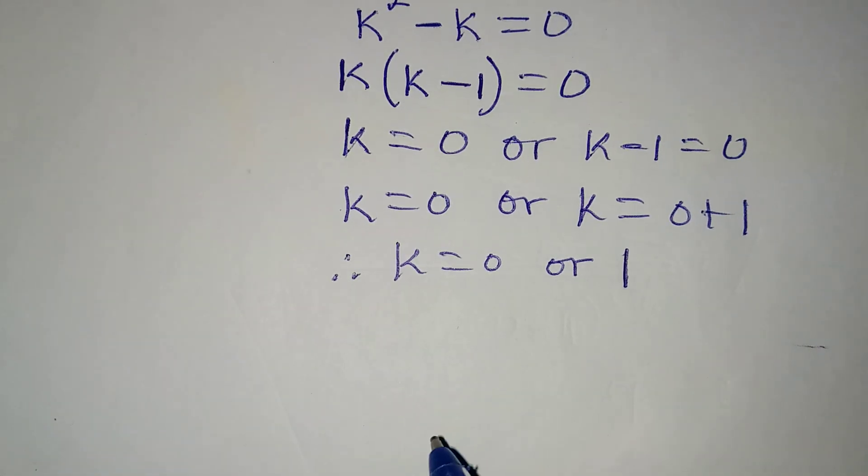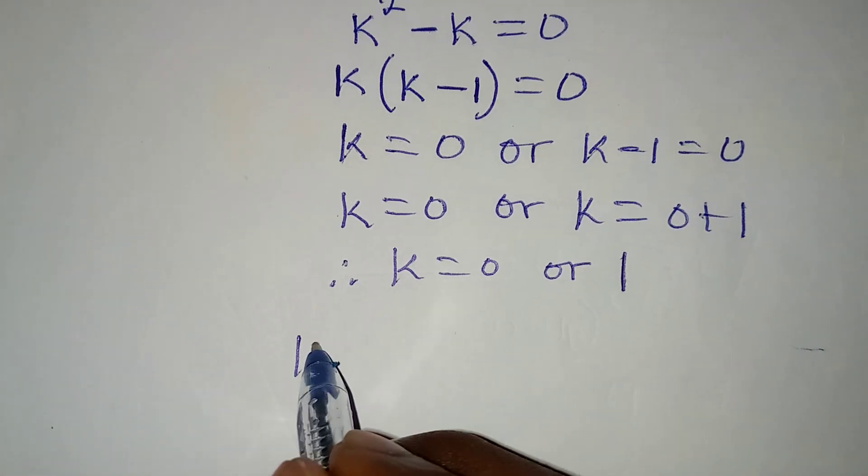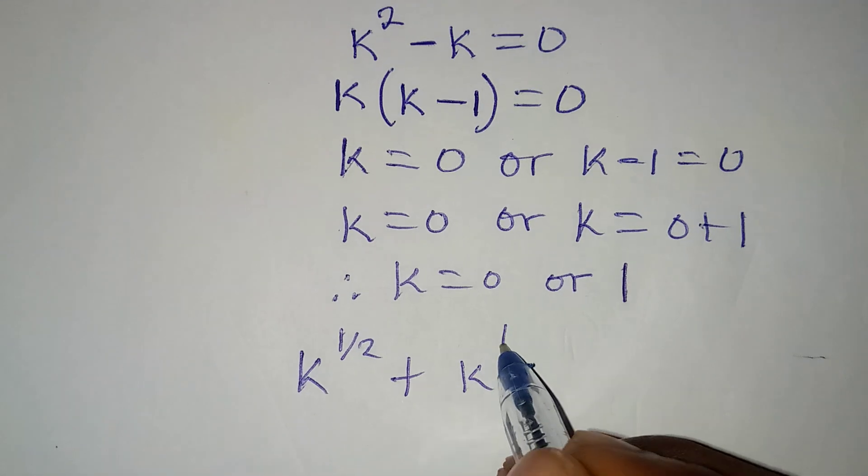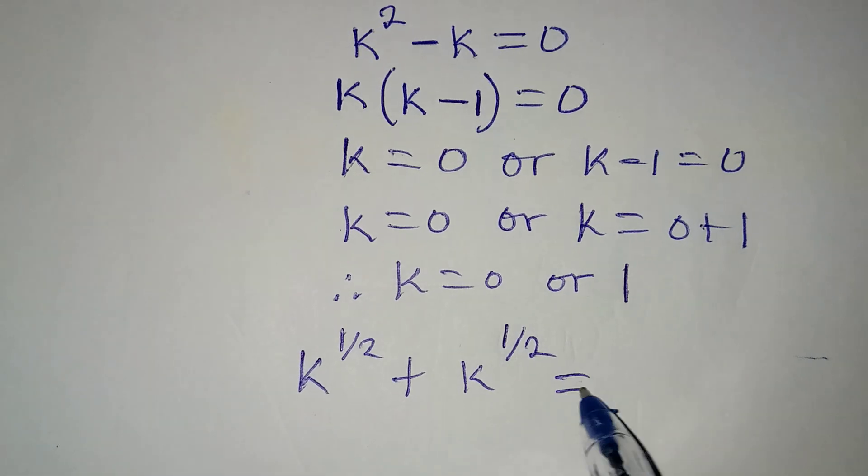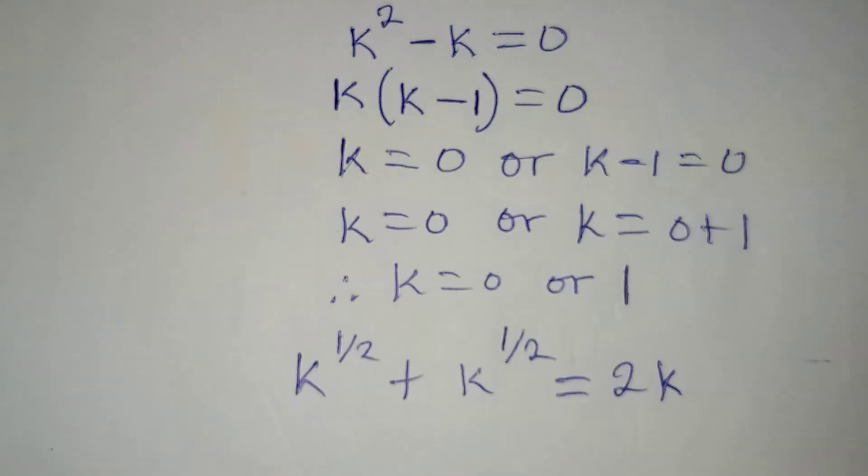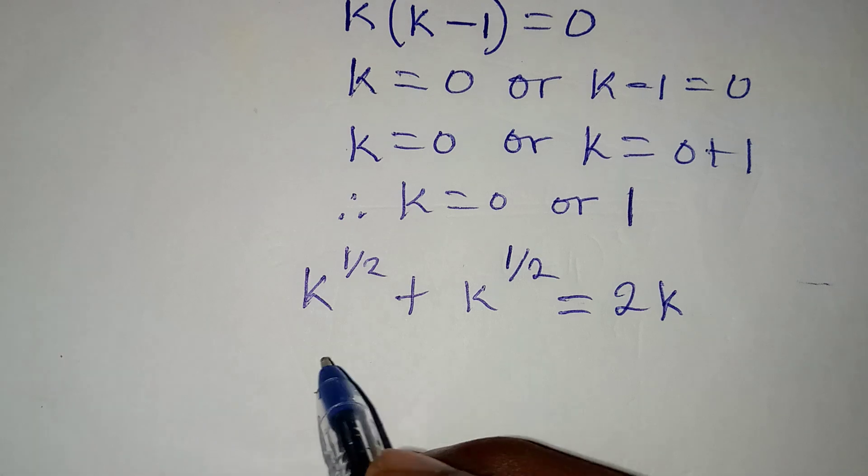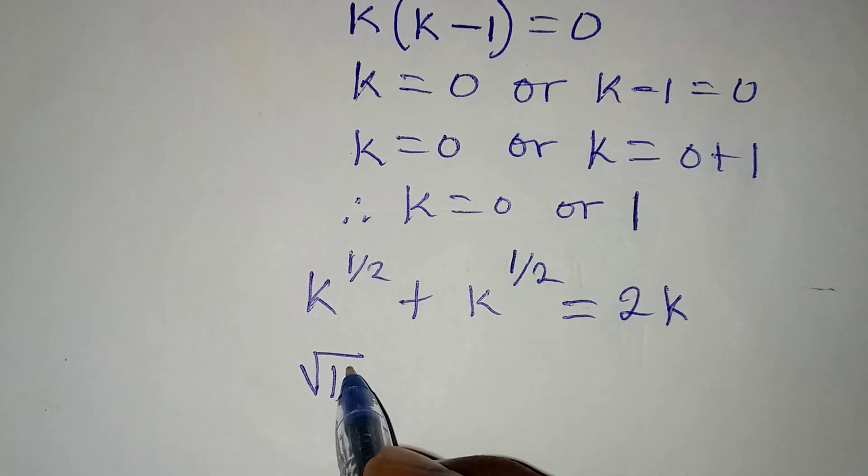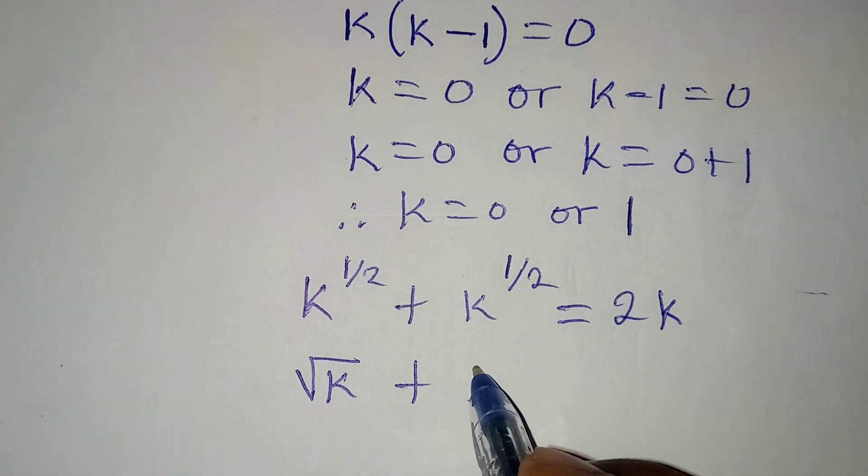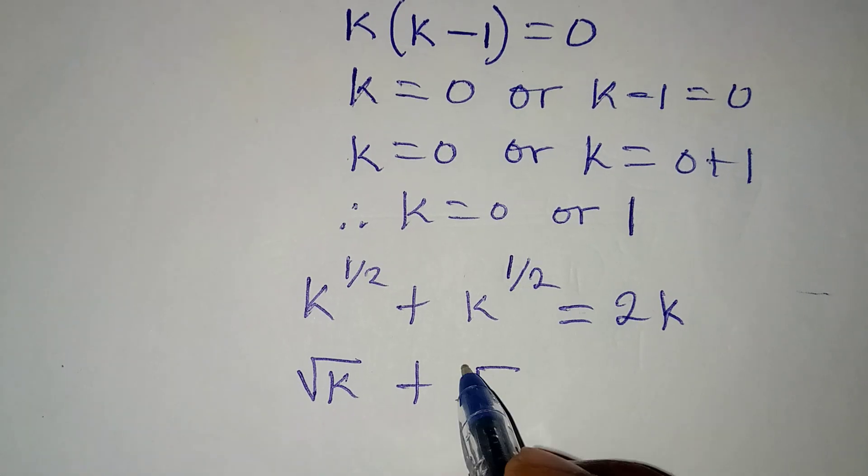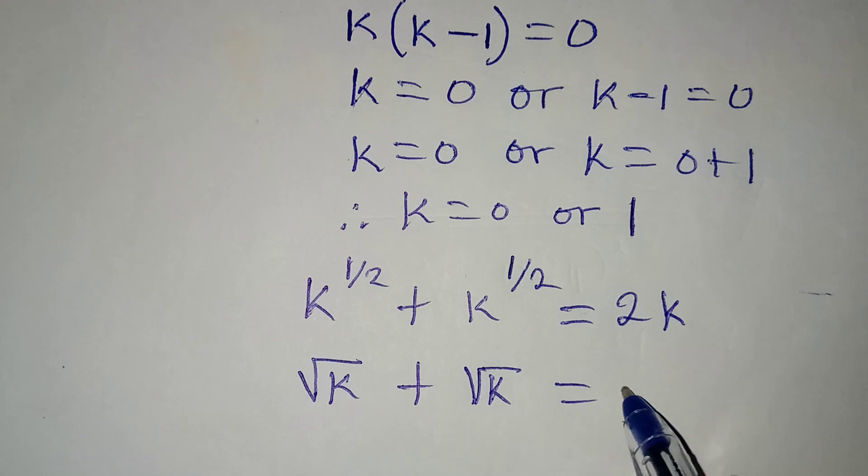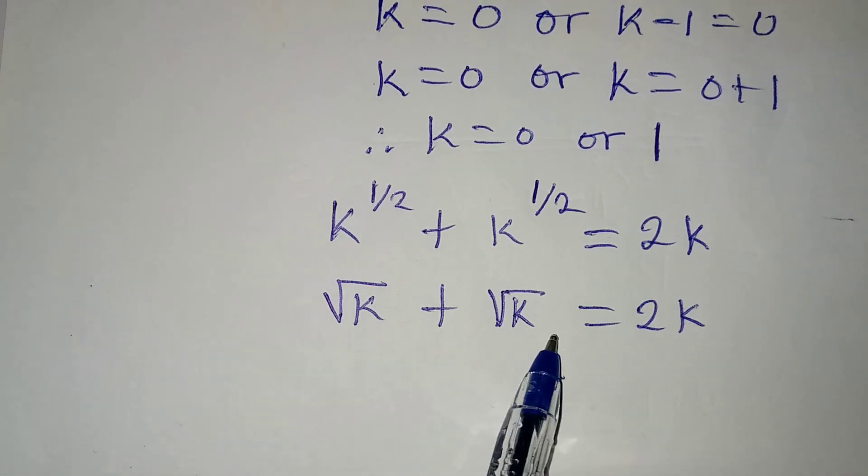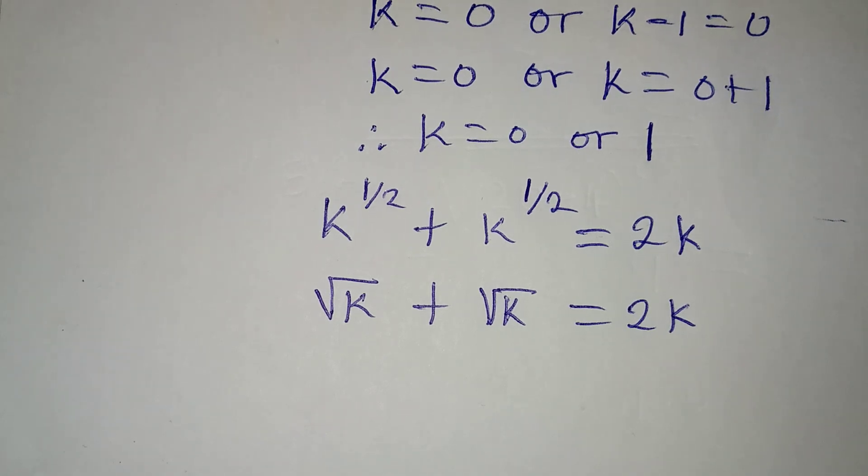And then remember that the given equation is k to the power of 1 over 2 plus k to power of 1 over 2 to be equal to 2k, and I equally said that k to power 1 over 2 is root k, then I have root k again. I have root k giving us 2k. Now automatically if you put zero here, everything is zero on the two sides.